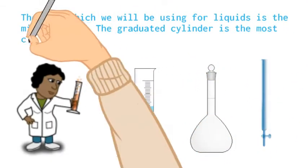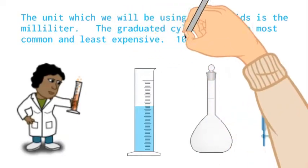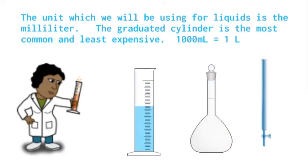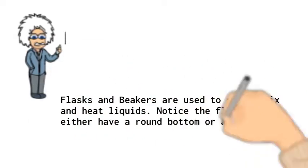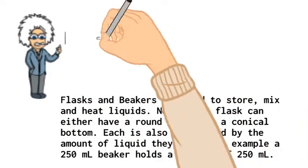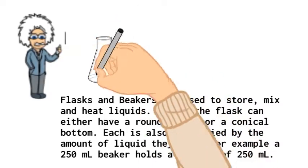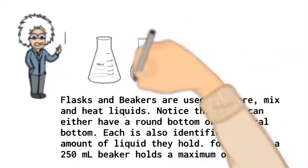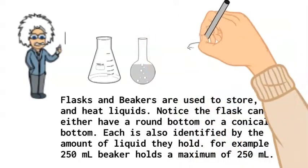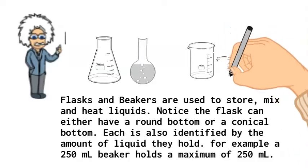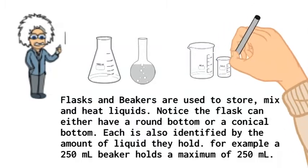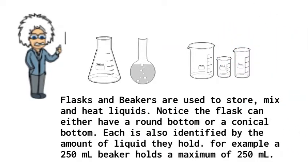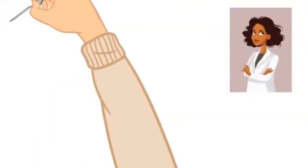Each of these pieces of equipment measures volume accurately, however the graduated cylinder is the most common and the least accurate. Flasks and beakers are used to store, mix, and heat liquids. They are not designed to give accurate measurements, but the unit gives the general maximum amount that the flask or beaker can hold. This first flask would be called a 1000 milliliter Erlenmeyer flask and the 250 milliliter beaker roughly holds 250 milliliters of liquid.